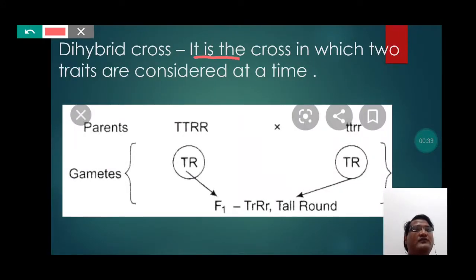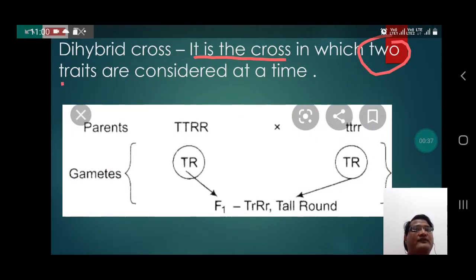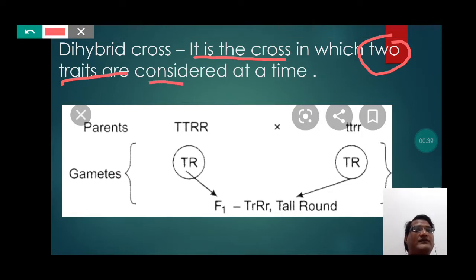A Di-Hybrid Cross is a cross in which two traits are considered at a time. Traits are actually the features of an organism.